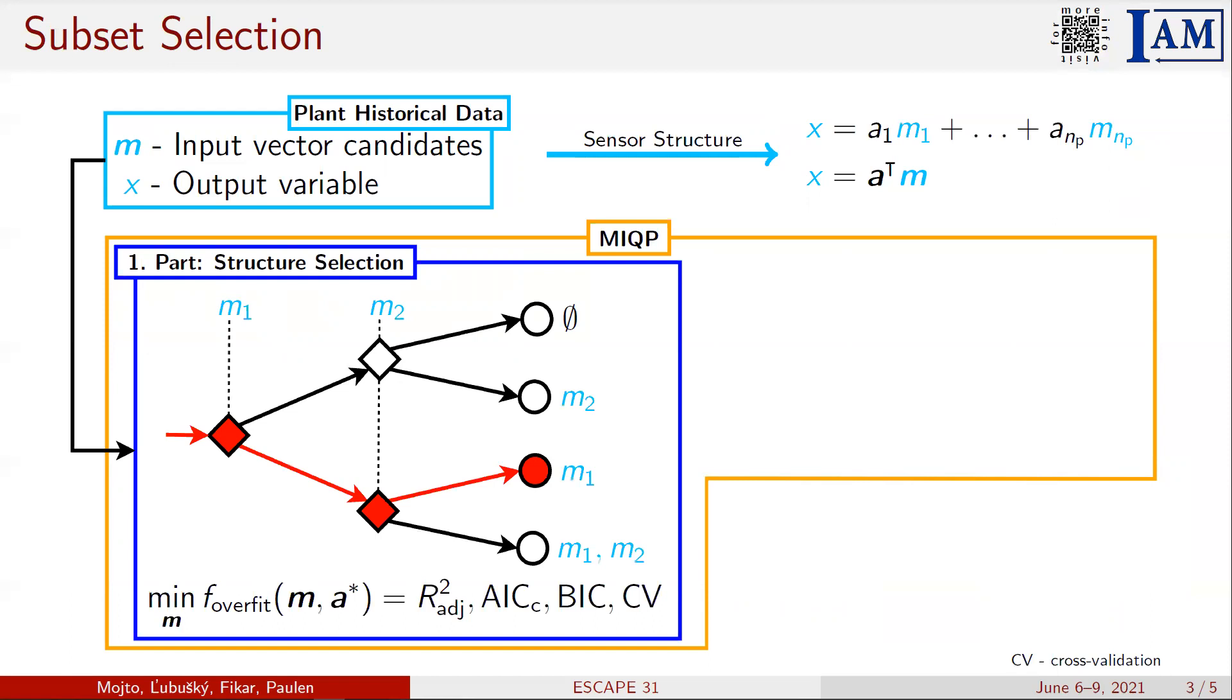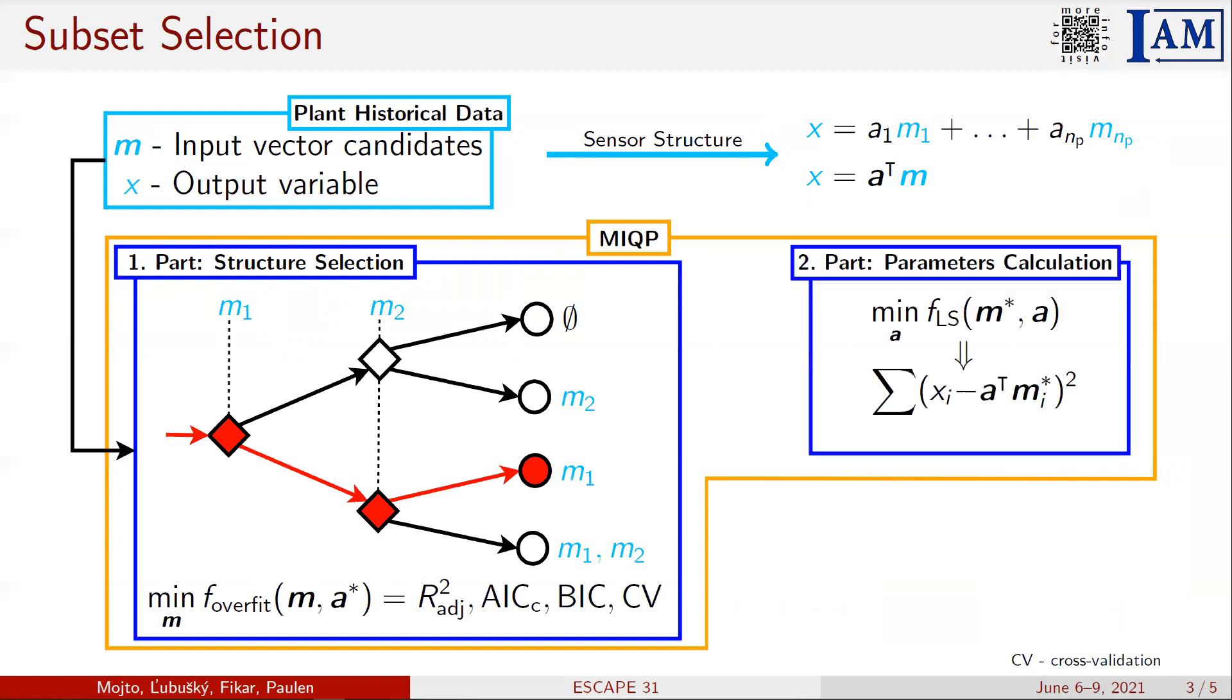according to various model overfitting criteria such as adjusted R squared, corrected AIC information criterion, Bayesian information criterion, or cross-validation. The parameters are calculated in the second part of MIQP using least squares.